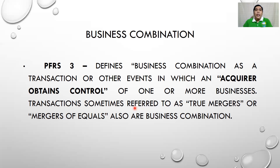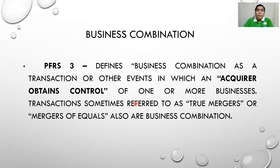Take note: business combination, or PFRS 3, only applies to corporations. For partnerships or sole proprietorships, business combination does not happen — it's very impossible. Once a sole proprietorship is closed, the business will automatically liquidate or cease to exist.